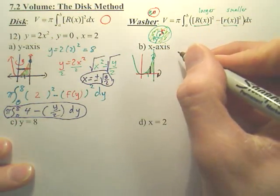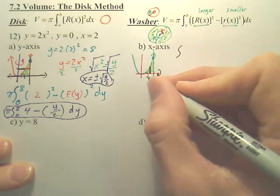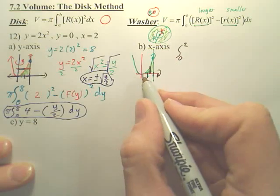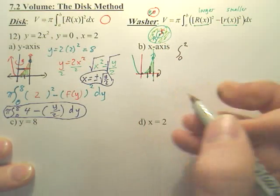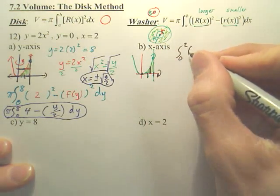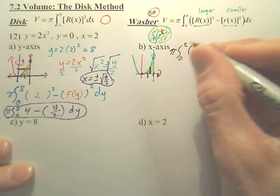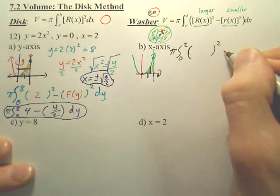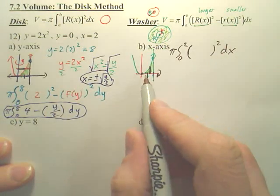Now, what you're going to do here - your interval, if you look at it, it's from zero to two because we're going along the x-axis. We've always put a pi in front, and we're going to square. We've just got to have the function, it's dx, because we're going across this way.